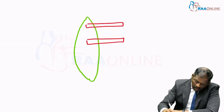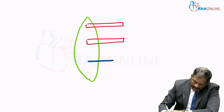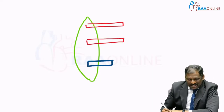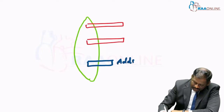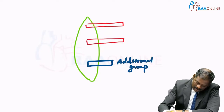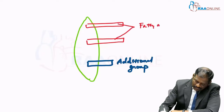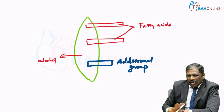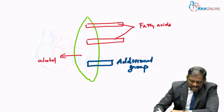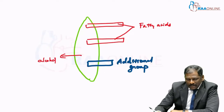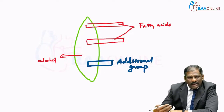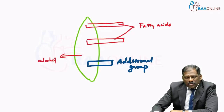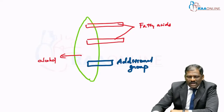So along with the fatty acids, any kind of additional group gets attached. If this additional group is a carbohydrate, this is called a glycolipid. These will be your fatty acids and this is your alcohol, so this is a complex or compound lipid. If this additional group happens to be a phosphate group, then this is called a phospholipid.